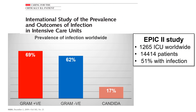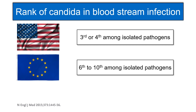In the EPIC-2 study, the largest study worldwide including 14,000 patients, 51% of patients had an infection. Candida constitutes 17% of infections worldwide, ranking third after gram-positive and gram-negative infections. The rank of Candida in bloodstream infections differs by region: in the United States it ranks third or fourth among isolated pathogens, while in European countries it ranks sixth to tenth.